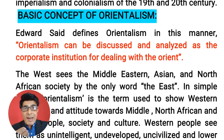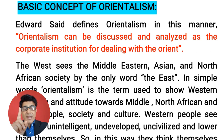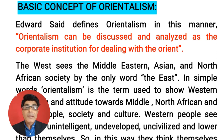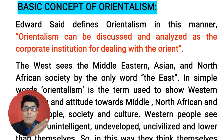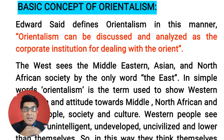Now let's try to understand the basic concept of Orientalism in detail. Edward Said has defined Orientalism as — I quote his words — 'Orientalism can be discussed and analyzed as the corporate institution for dealing with the Orient.' So there are two groups. One is the Orient — Orient means those who are colonized people like India, Pakistan, Bangladesh, Japan, Singapore. Those who are the colonized people are called Orient. And Orientalism is their European perspective to look at and to study the colonized people. And these colonized people are known as Orient. The West people see the Middle Eastern or Asian and North African societies, and they are known as East.